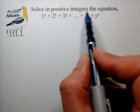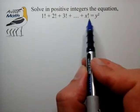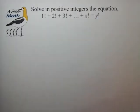We want to solve in positive integers the equation 1 factorial plus 2 factorial up to and including x factorial is equal to some square y squared.